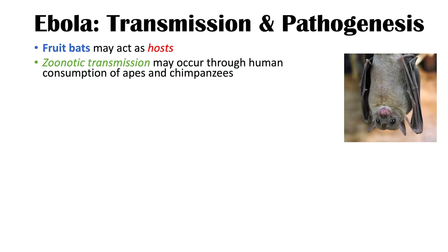Zoonotic transmission may occur via human consumption of apes and chimpanzees. In certain areas in Africa where there is human consumption of ape and chimpanzee meat, this appears to be a cause of transmission.